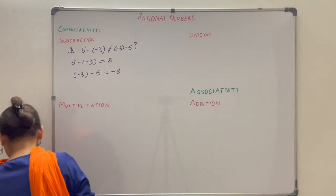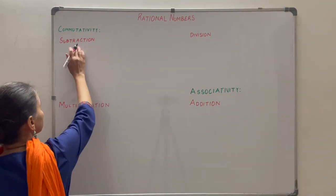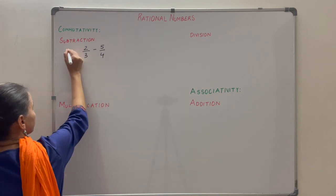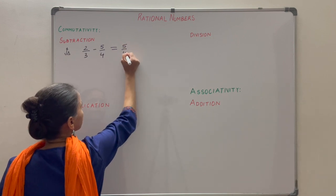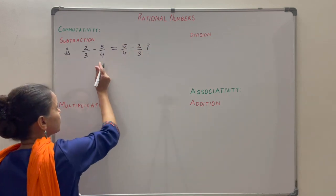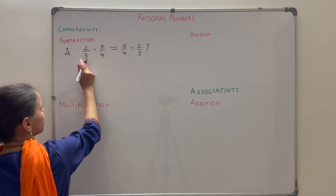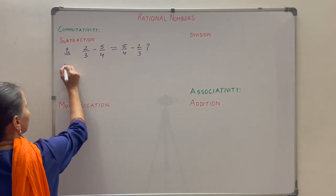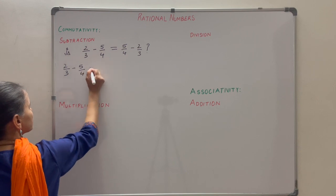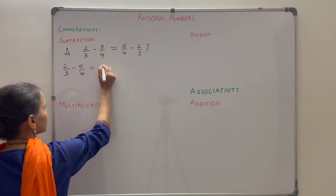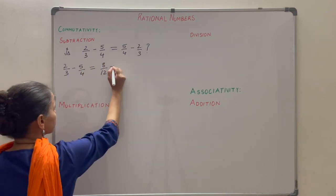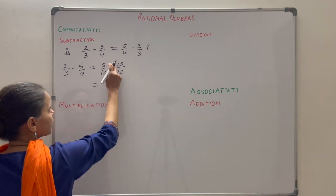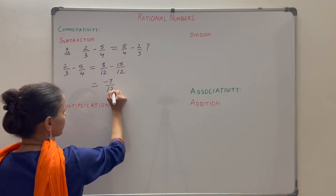What about rational numbers? Let us understand this with an example. We have two rational numbers: 2 by 3 and 5 by 4. Is 2 by 3 minus 5 by 4 equal to 5 by 4 minus 2 by 3? The denominators are different, so we take the LCM of 3 and 4, which is 12. Solving the left side: 8 by 12 minus 15 by 12 gives minus 7 by 12.